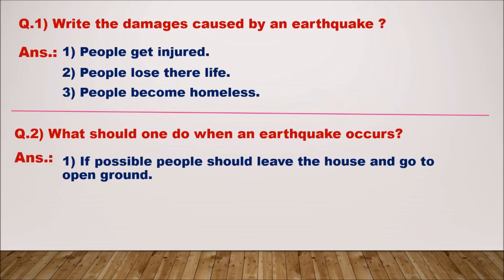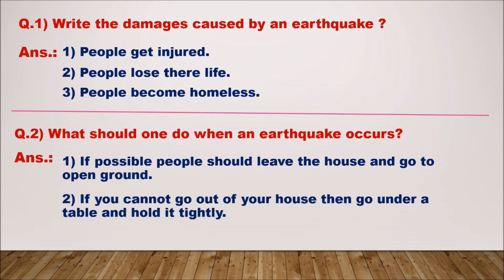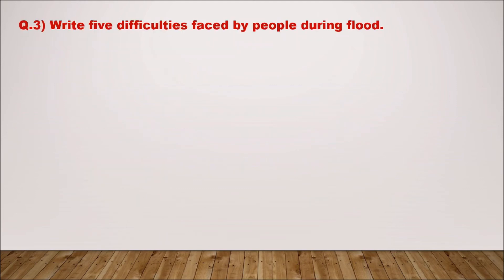Question two: what should one do when an earthquake occurs? Answer: if possible, people should leave the house and go to open ground. Second, if you cannot go out of your house, go under a table and hold it tightly. Third, turn off all electrical switches.